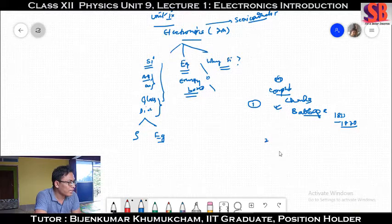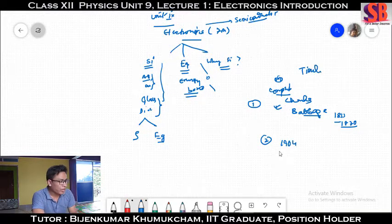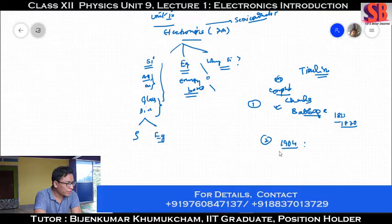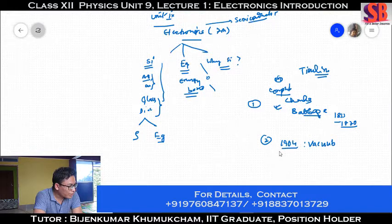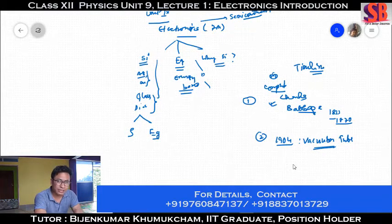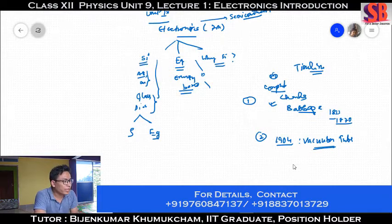In 1904, we have a timeline. We have general knowledge — we have a timeline. In 1904, we have a vacuum tube. What is a vacuum tube? I am going to explain. The vacuum tube — the semiconductor and its properties — is related to the vacuum tube.